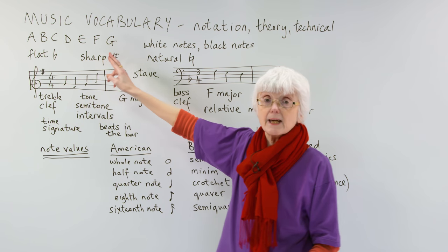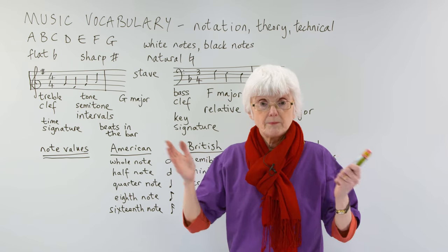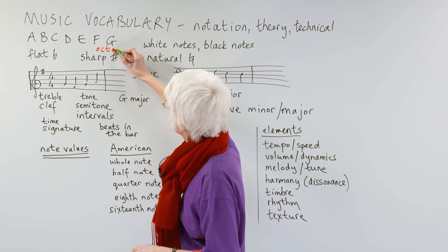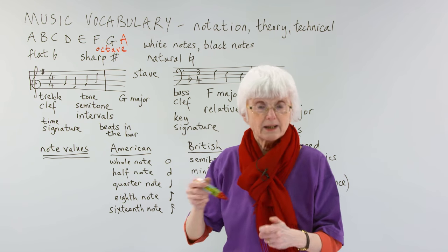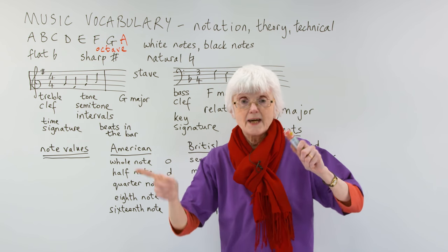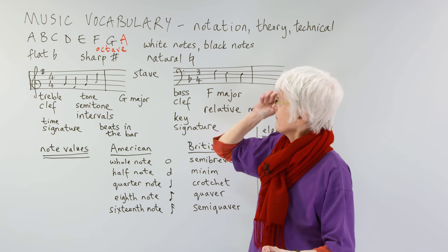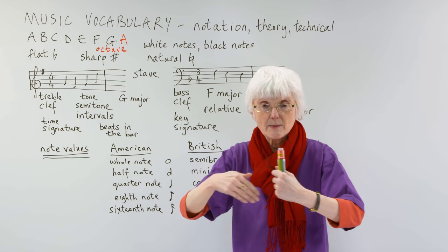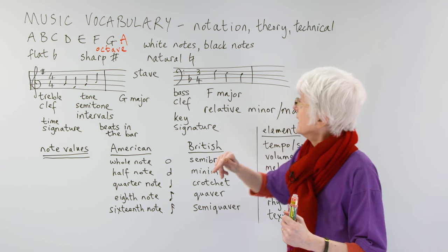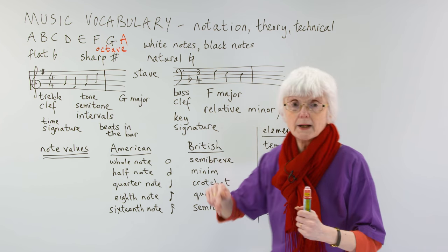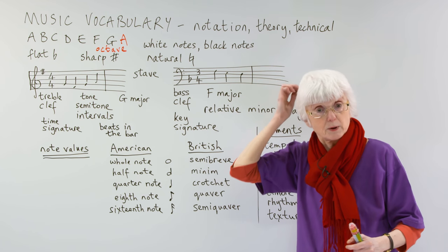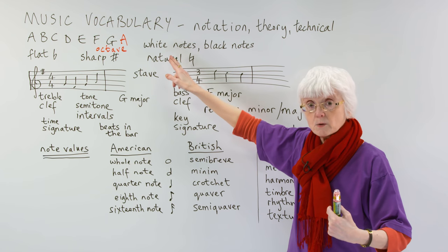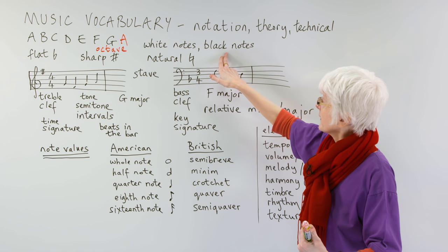The names of the notes are A, B, C, D, E, F, G, so that would give you an octave up to the next A. A to A would be an octave. If you're looking at a piano keyboard, for example, those are the notes on there, the white notes. So we have on the piano keyboard, you've got the white notes and the black notes.